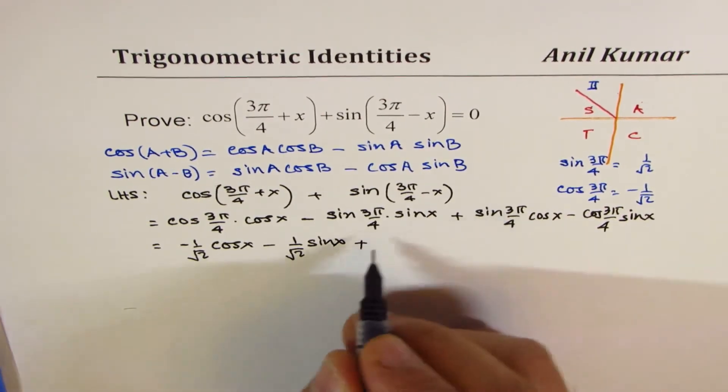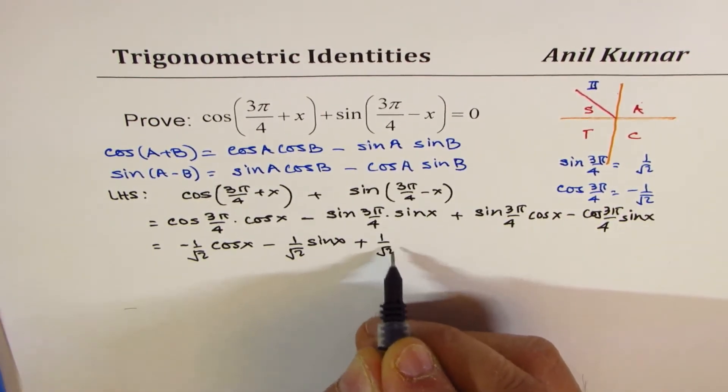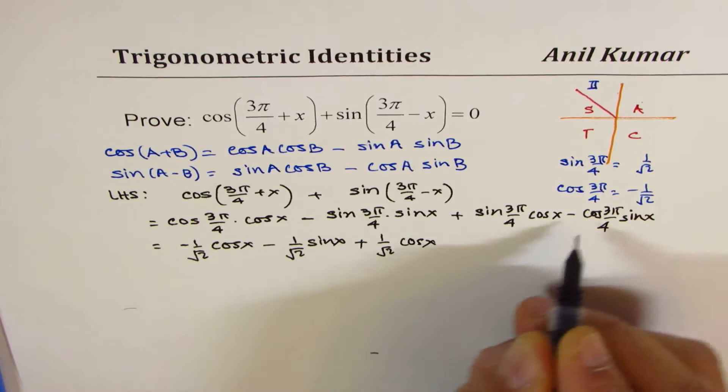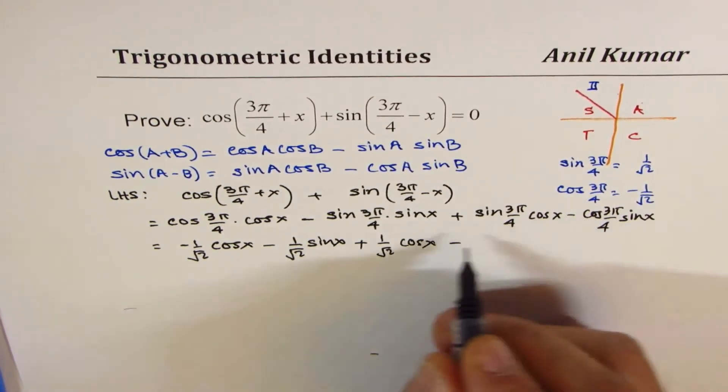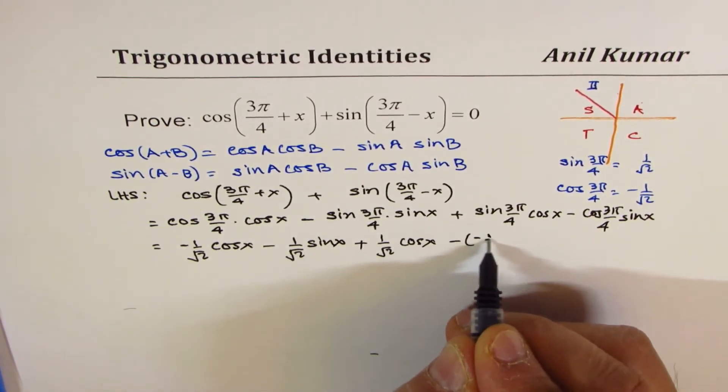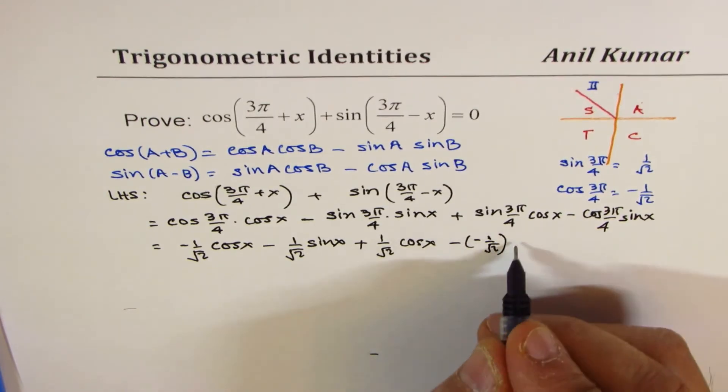Here we have + sin is positive, so we have 1/√2 cos(x). Here it is minus, cos is negative, so we have -1/√2 of sin(x).